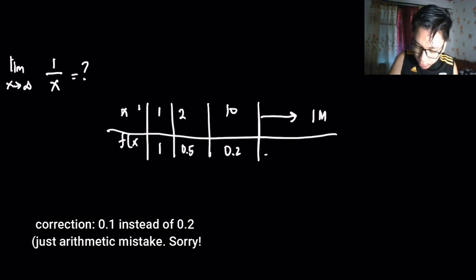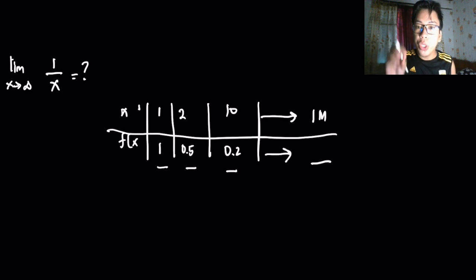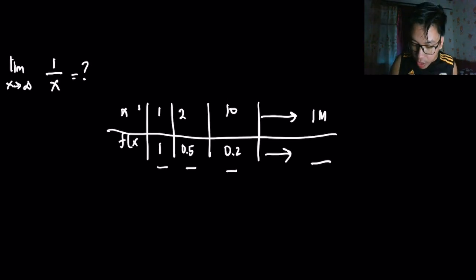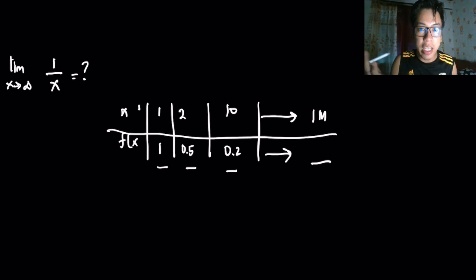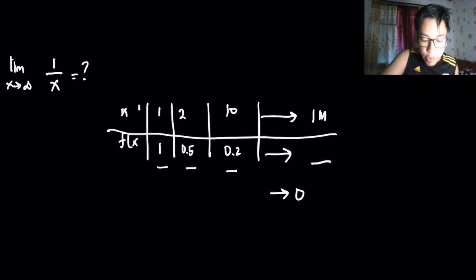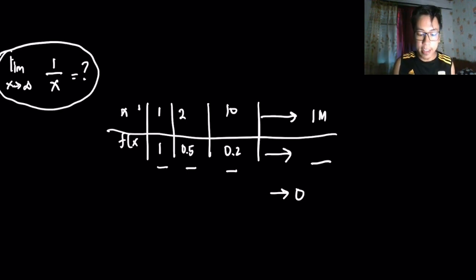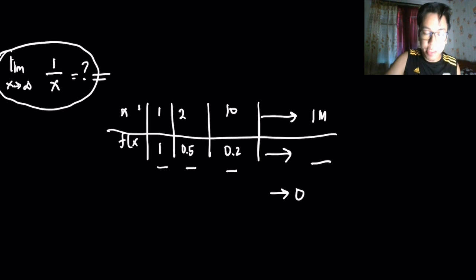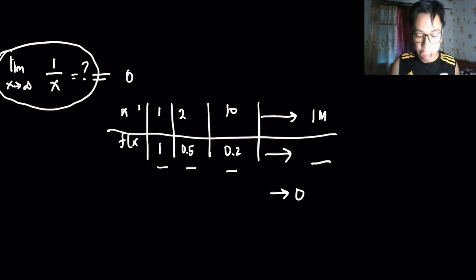Now if you approach x to a very large value, say 1 million, as x increases the value of f(x) decreases. But notice it never actually reaches 0 — even if you take a value greater than a million, f(x) won't equal 0 or go below 0. As x goes to infinity, f(x) approaches 0 but never touches 0. So the limit of 1/x as x approaches infinity is 0. That is the intuitive idea of limits at infinity.